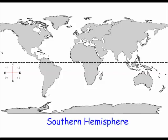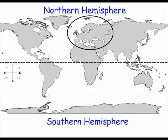Taking a look at the world map, you can see below the equator is the southern hemisphere and above the equator is the northern hemisphere. Circled is Europe.